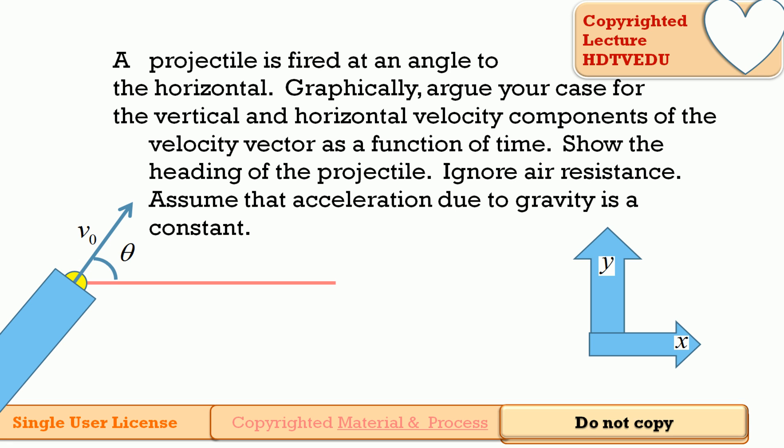A projectile is fired at an angle to the horizontal. Graphically, argue a case for the vertical and horizontal velocity components of the velocity vector as a function of time. Show the heading of the projectile. Ignore air resistance. Assume that acceleration due to gravity is a constant.